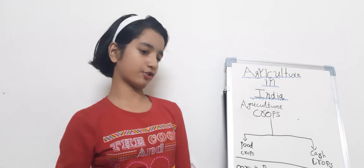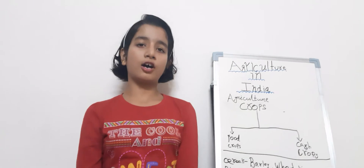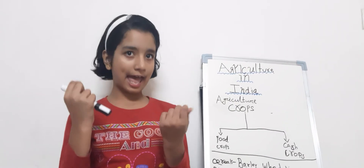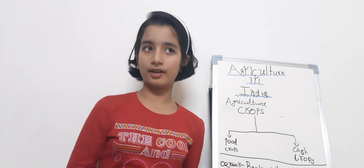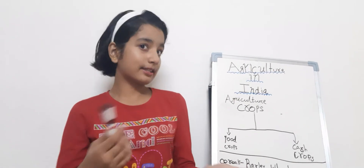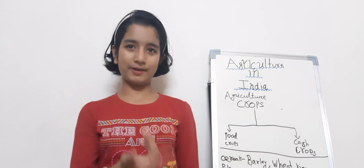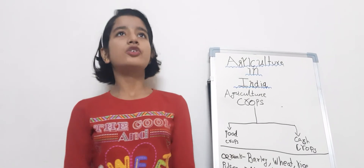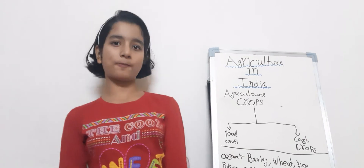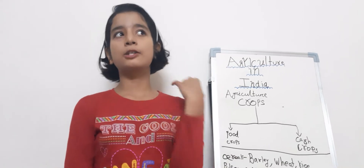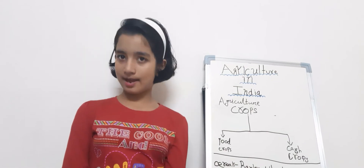So now cash crops. You can know it by the name — cash. Let me tell you the examples. Examples of cash crops are spices, oil seeds, and beverages.